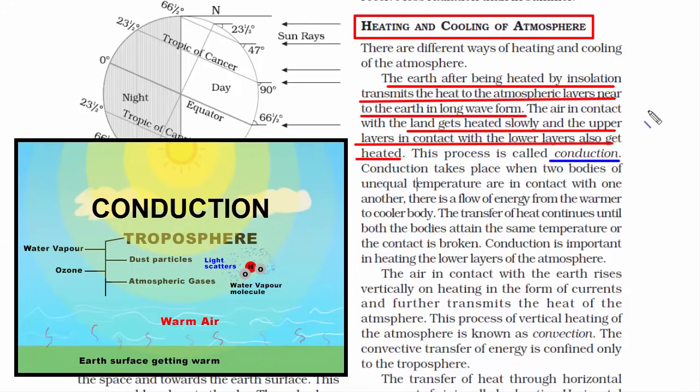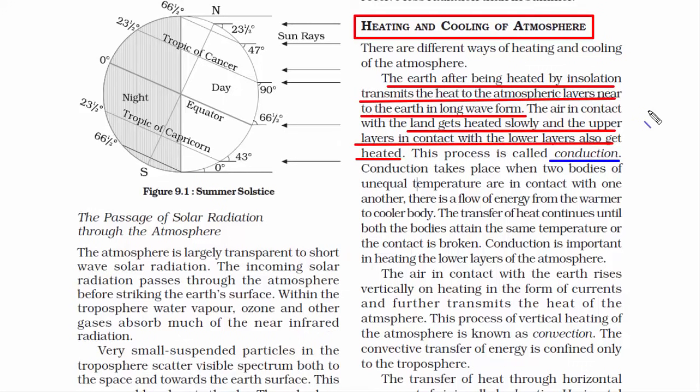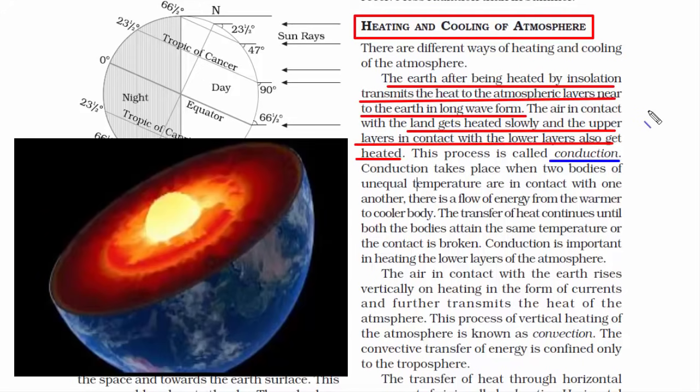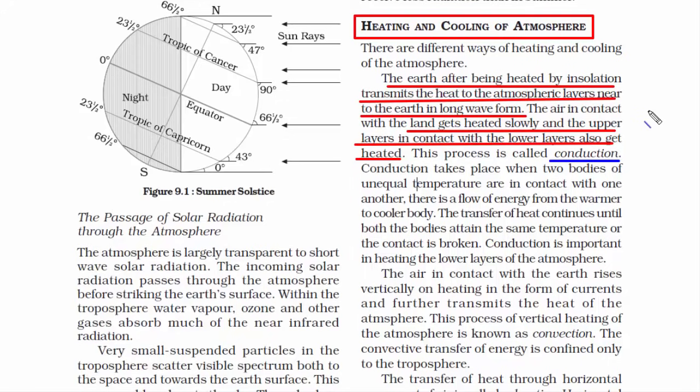The earth's surface receives heat from two sources. One, as we know, is through sun rays, and the other source is the earth's core. So now you are totally aware of the heating pattern of the earth's surface.